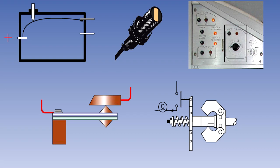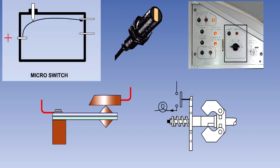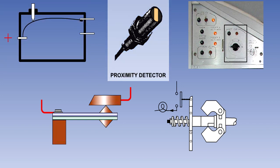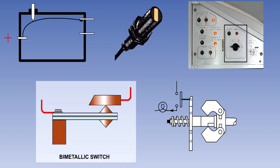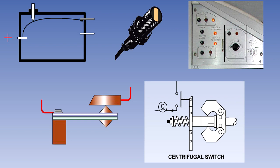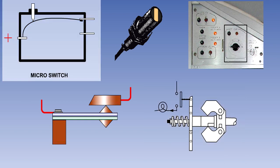In this lesson, we will discuss the automatically operated switches which may be found on an aircraft. They include microswitches, proximity detectors, time switches, bimetallic switches, and centrifugal switches. We will examine each of these types of switch, beginning with microswitches.